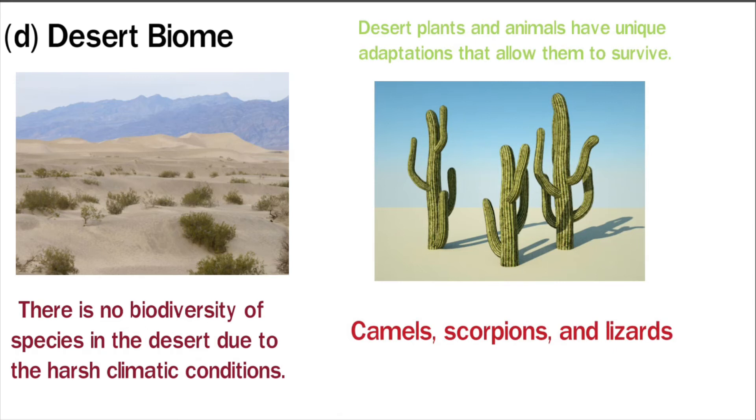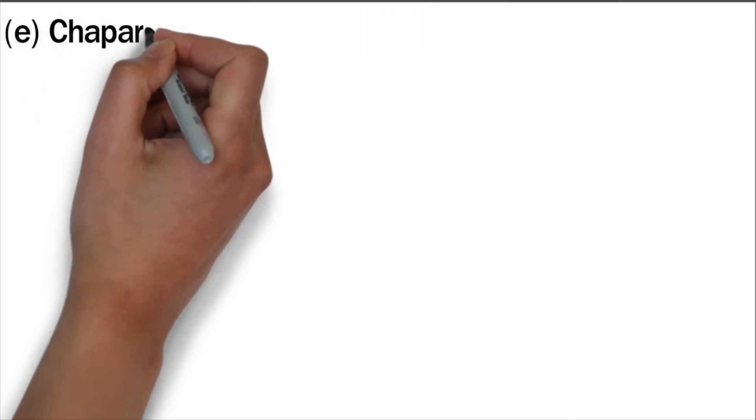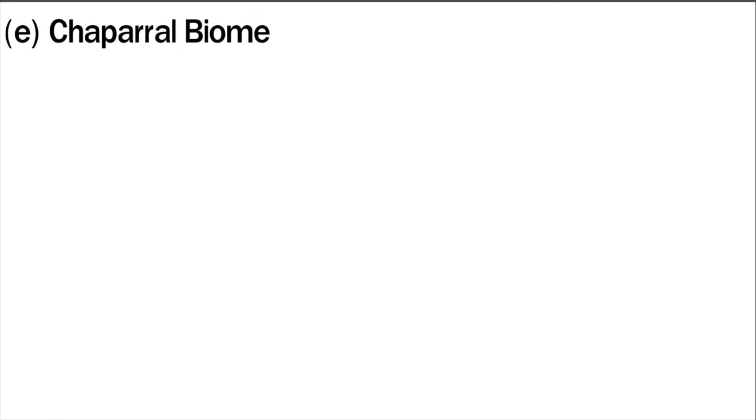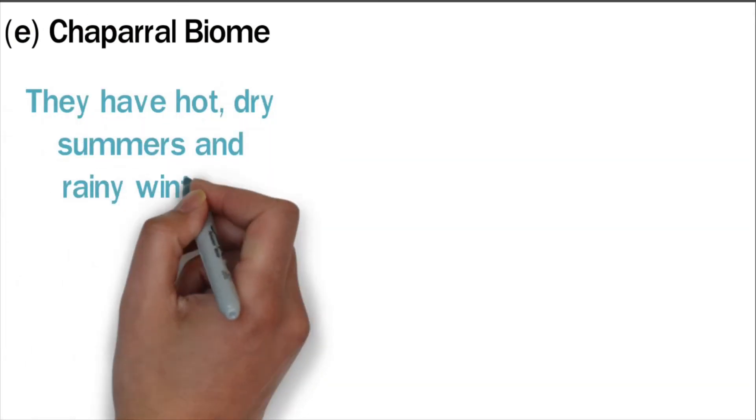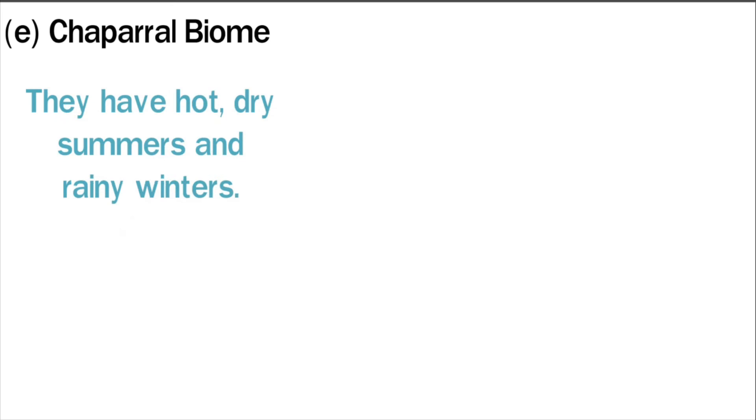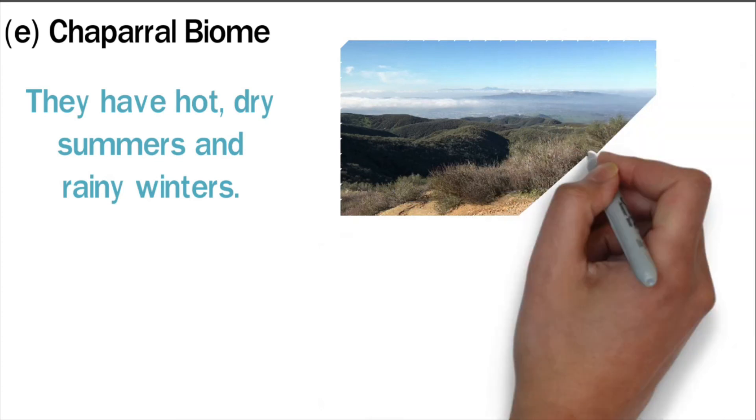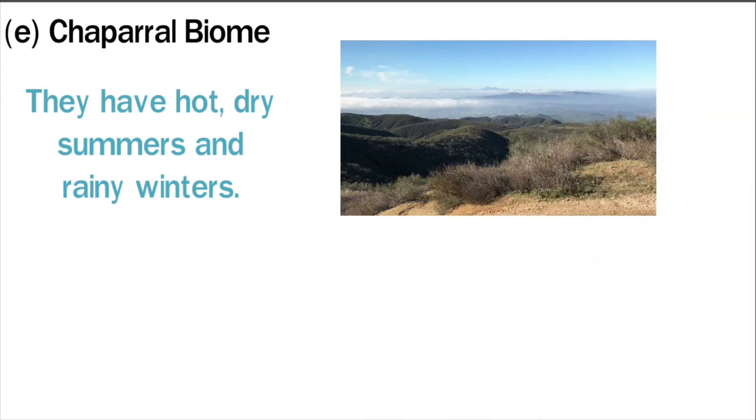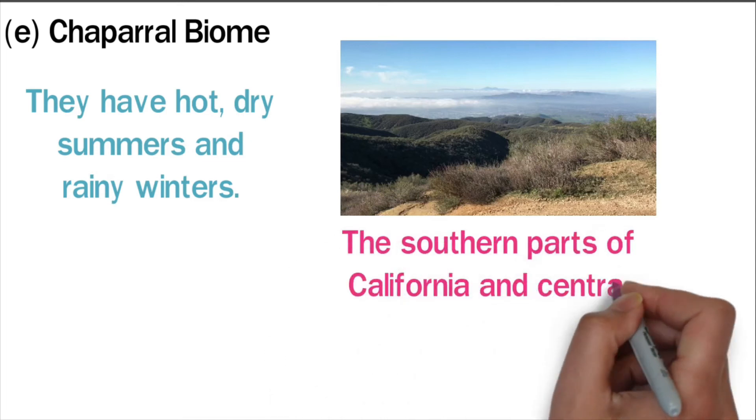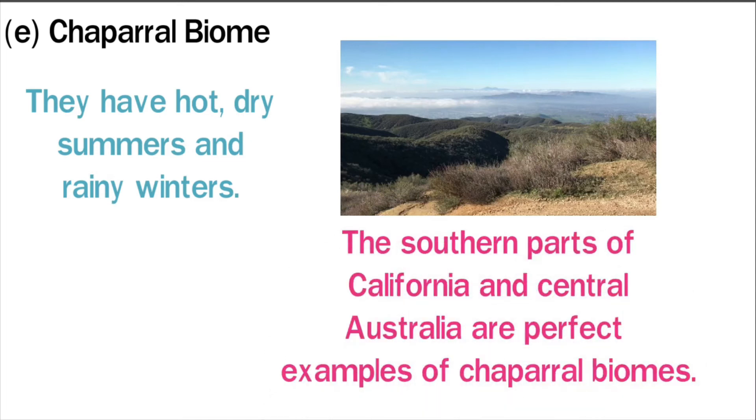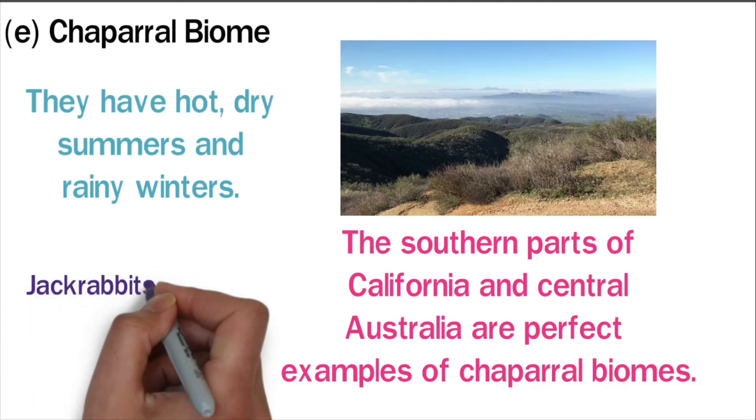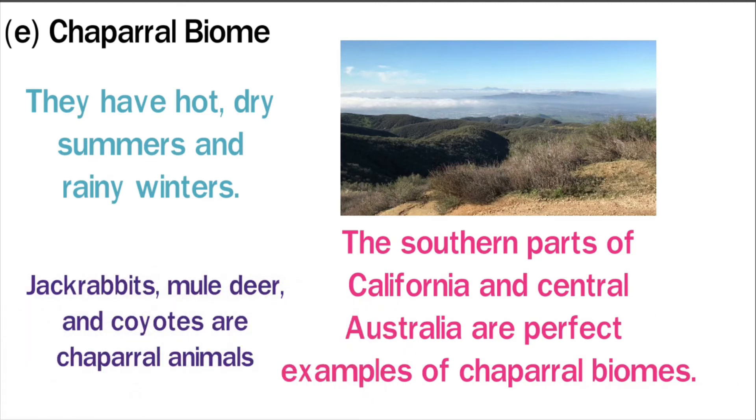Chaparral biome: Chaparral biomes are found in a few regions around the world. They have hot dry summers and rainy winters. Since chaparral areas receive minimal rainfall, less than 30 inches in a year, they are characterized by shrubs and scattered trees. A chaparral biome is vulnerable to fires during hot summers. The southern parts of California and central Australia are perfect examples of chaparral biomes. Jackrabbits, mule deer, and coyotes are chaparral animals.